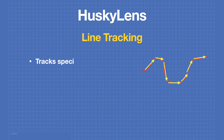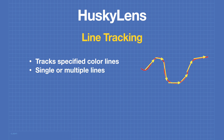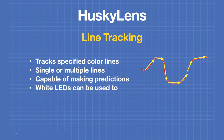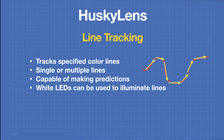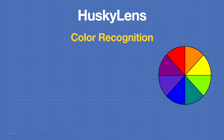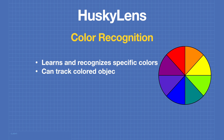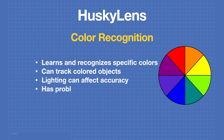In line tracking mode the Husky Lens can track a specified colored line, working with single or multiple lines, and is capable of predicting which direction the line will continue. The white LEDs can illuminate lines for better performance. In color recognition mode the Husky Lens learns and recognizes specific colors for tracking colored objects, though ambient lighting can greatly affect accuracy, and the device has problems with two objects of similar colors.